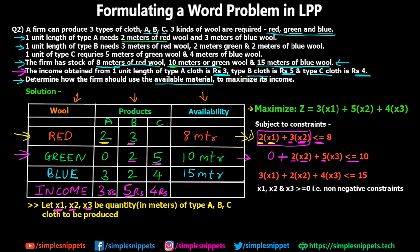The last constraint is 3x1 + 2x2 + 4x3 ≤ 15 for blue wool, where 3, 2, and 4 are the requirements for products A, B, and C respectively — and the limit is 15 meters. Of course, x1, x2, and x3 must all be greater than or equal to 0 as non-negativity constraints, since we cannot produce a negative quantity of cloth.